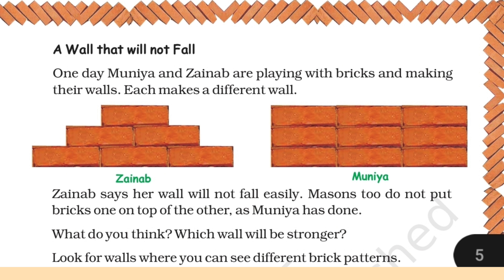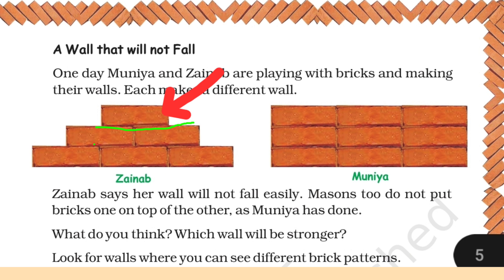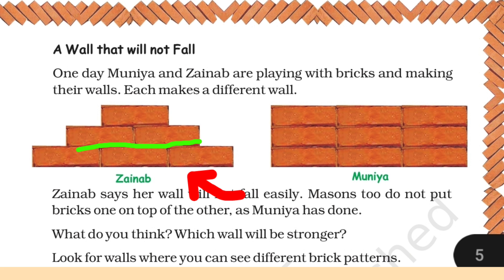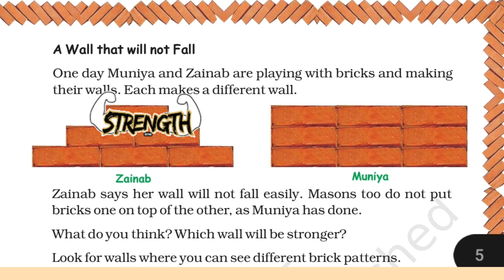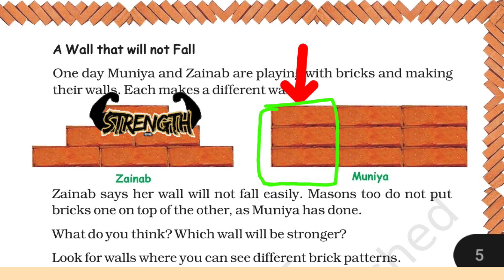A wall that will not fall. One day Muniya and Zainab are playing with bricks and making walls. Each makes a different wall — Zainab's wall and Muniya's wall are in different patterns. Zainab says a wall will not fall easily if bricks are not placed directly on top of one another. Zainab's wall is stronger because each top brick is supported by two bricks below it. In Muniya's wall, if you break the first brick the entire row will fall because there is no support.